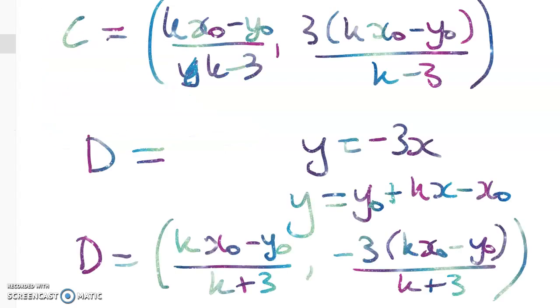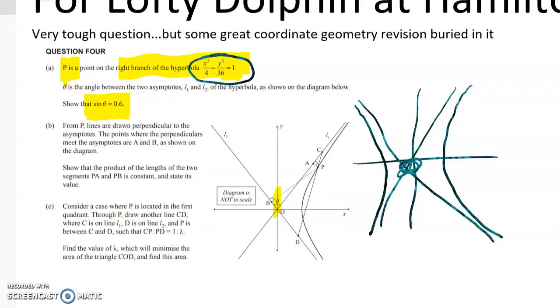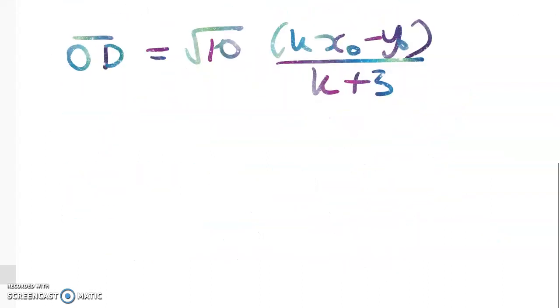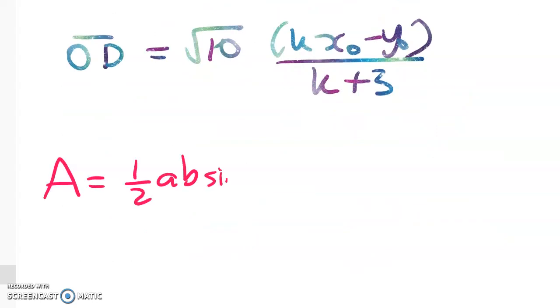We're told something useful in part A of this question about the angle. So going back to here, we know that this angle here theta gives me sin θ = 0.6. And so when we're working with our triangle, this is θ here, we want π - θ. So think about what the area of a triangle is. Area of a triangle is ½ab sin C.